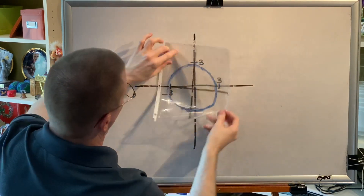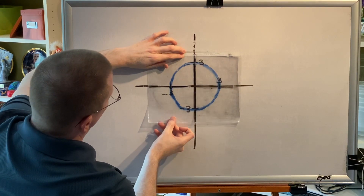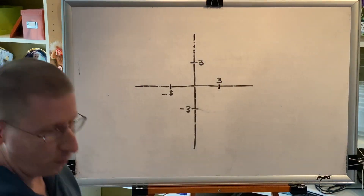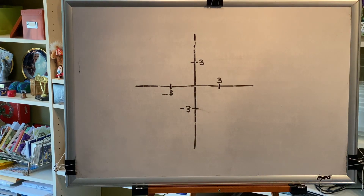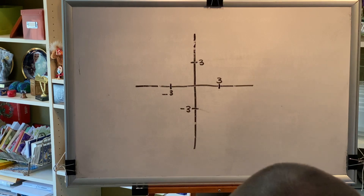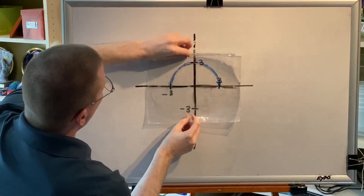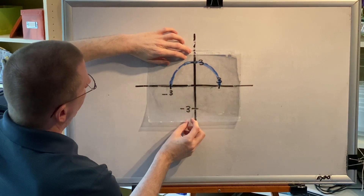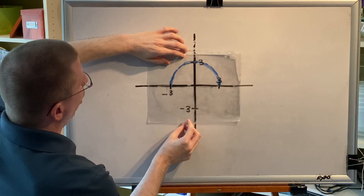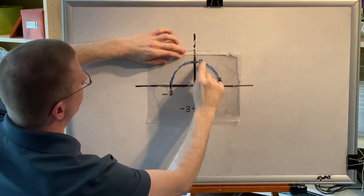Both of the graphs shown so far had origin symmetry. What does a graph look like if it does not have origin symmetry? Here's an example: a half-circle, still centered at the origin. Let's test this for all three types. First we'll test for x-axis symmetry — notice that the half-circle is at the top.